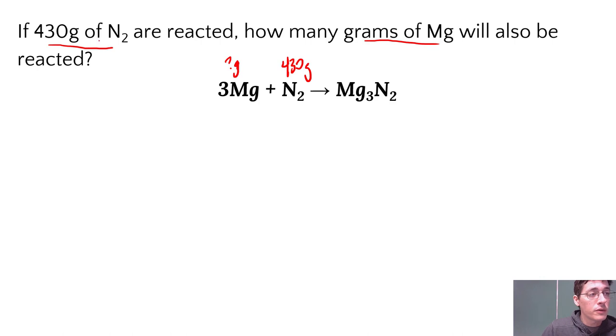So we start with our known. Always start with your known. 430 grams of N₂. And I'm going to set up a ratio. We're just going to tag on and on and on until we're done with our conversions.